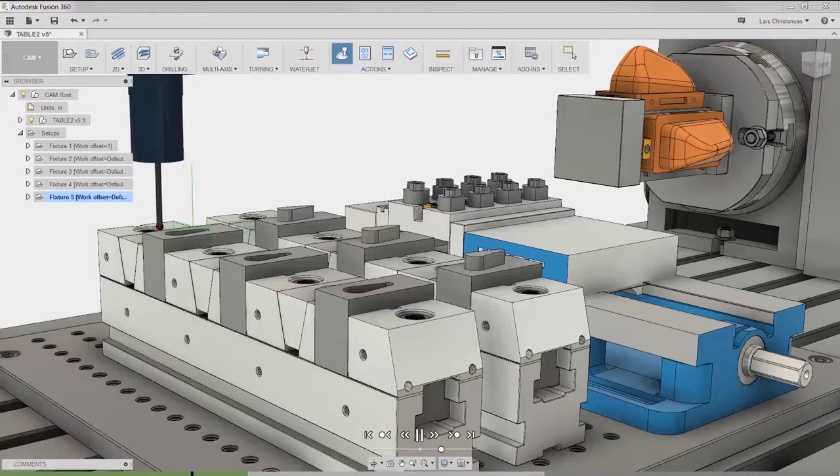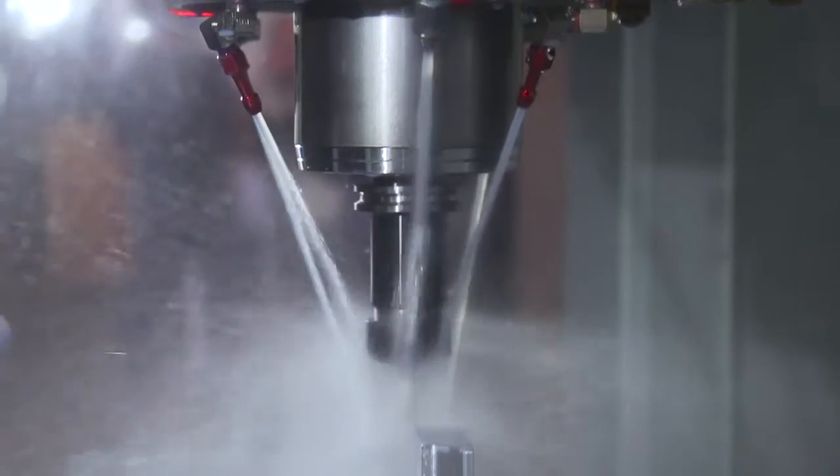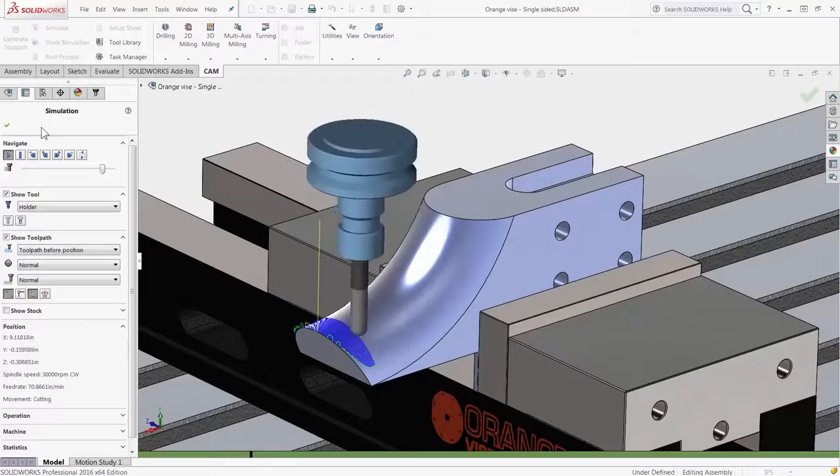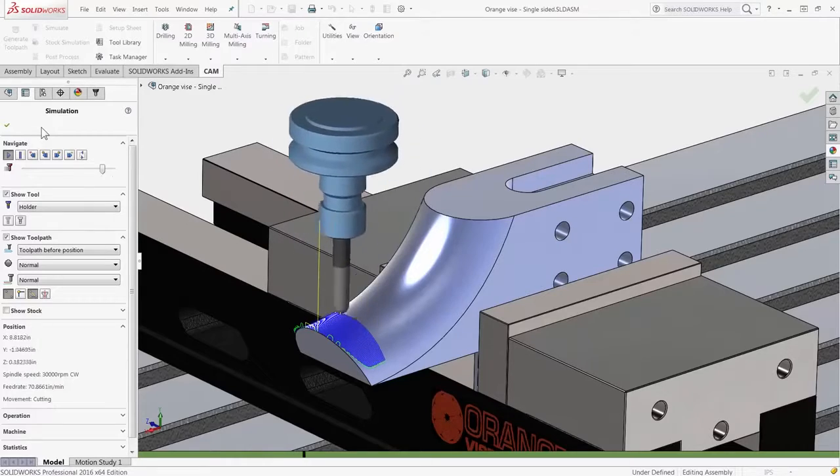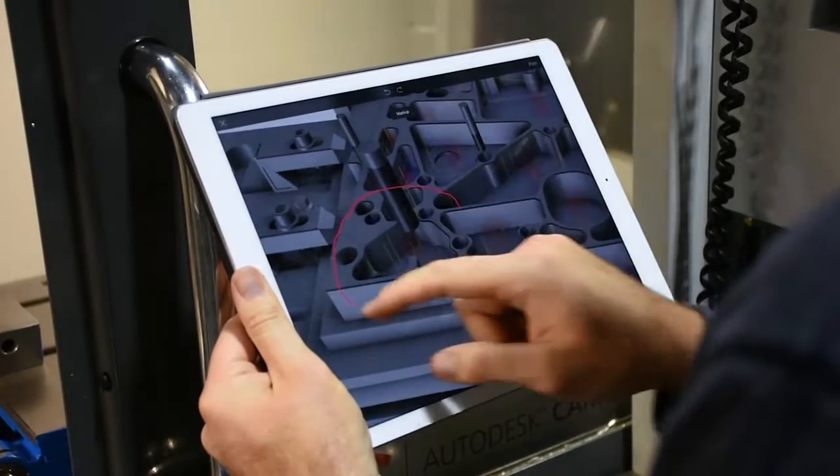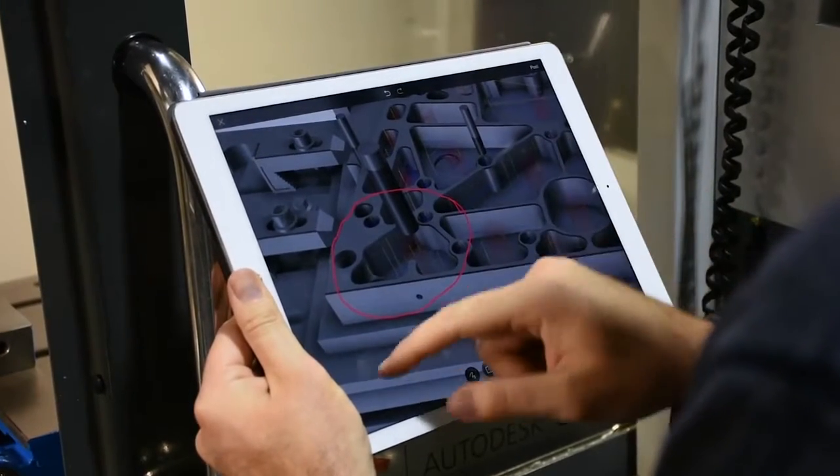Autodesk HSM is an underlying tool path technology that exposes itself inside of the environment where you're doing your design work. There's the HSM plugin for SOLIDWORKS, an add-in for Inventor users, and we've built a completely integrated solution with our Fusion 360 product.